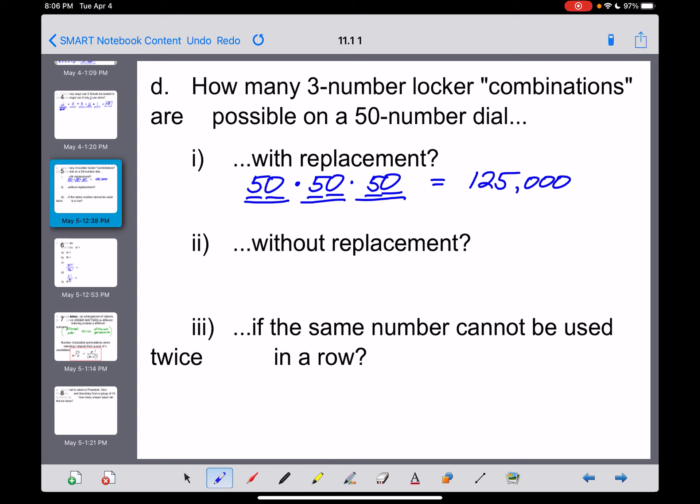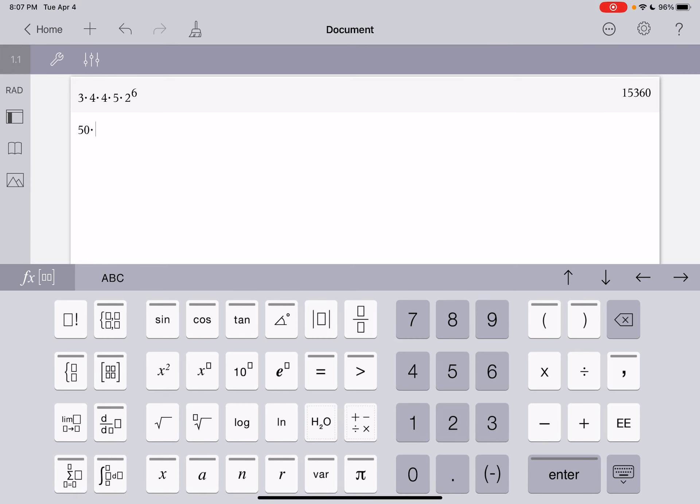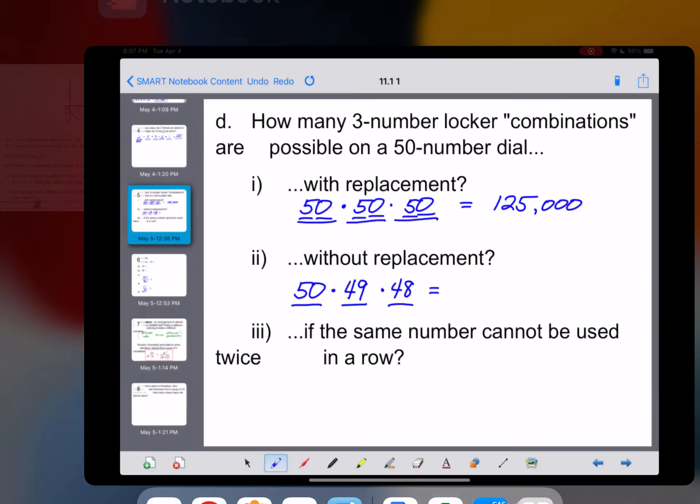Now, the second variation on this, what if we do this without replacement? And what that means is you're not allowed to use the same number twice. Well, we start off still with 50 options for the first number, but now you can't use the 25 or 32 or 39 or whatever it was you used for the first number, you can't use it for the second. So you're now down to 49 options for the second number. And for the third, you can't use the number you drew first, you can't use the number you drew second, but everything else is fair game, you're now at 48 options there, guys, for that third number. So this should end up being a little bit less than that 125,000, guys. So 50 times 49 times 48 is going to get us 117,600.